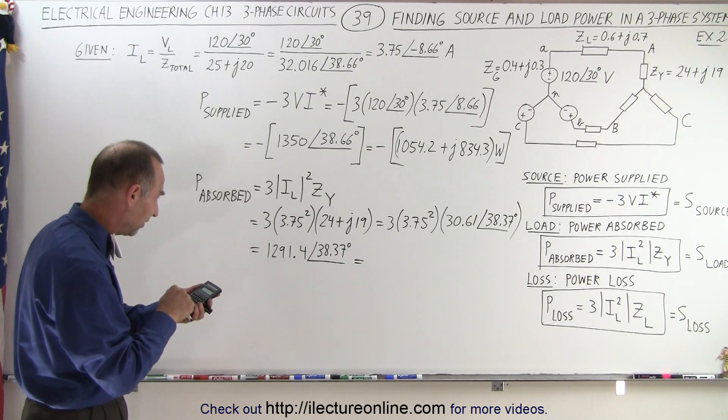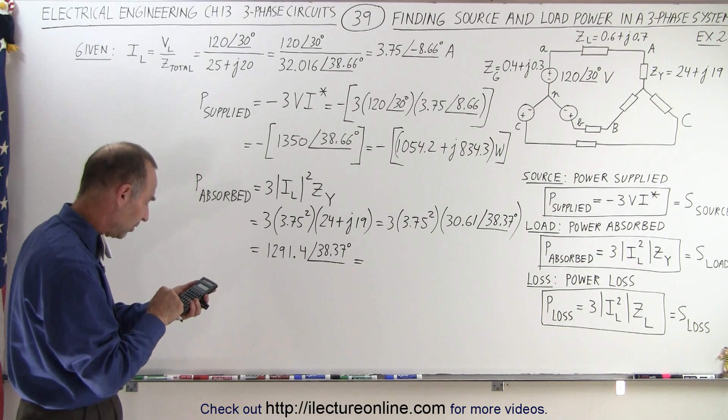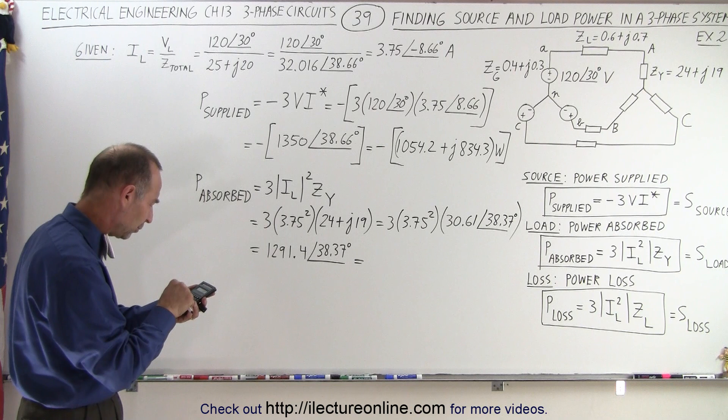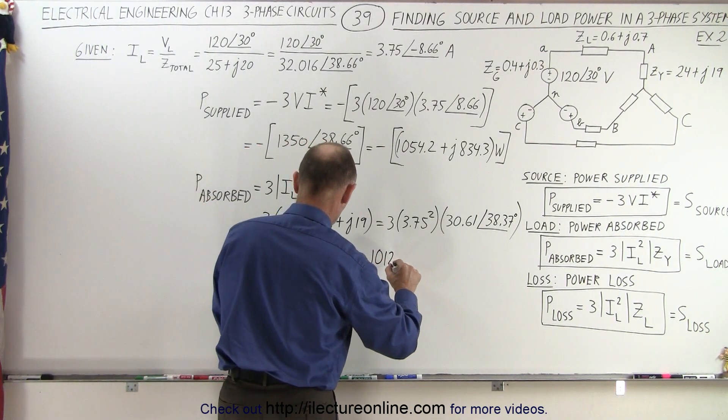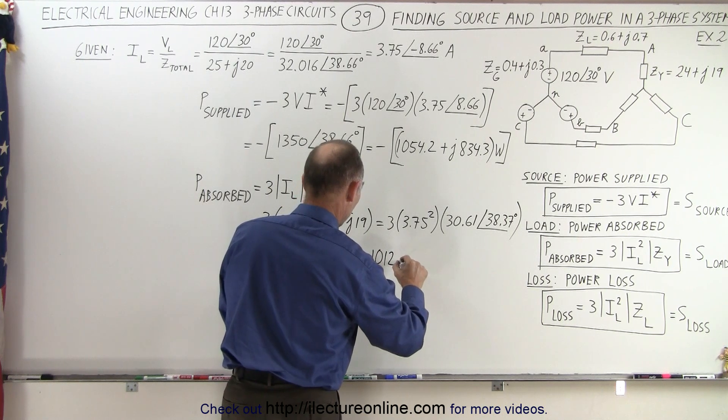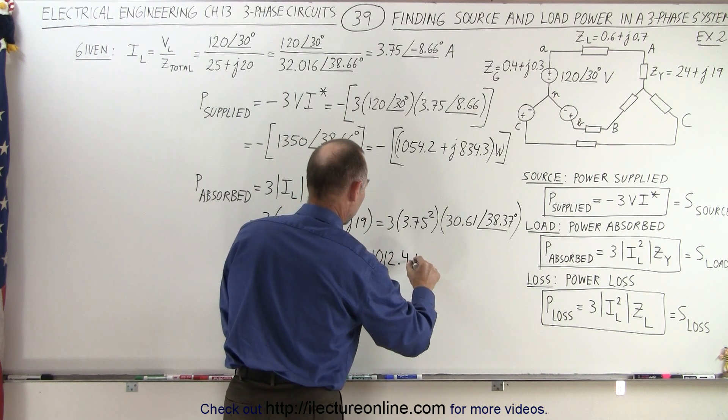So multiply this times 38.37, take the cosine of that, equals the real part of 1012.4 plus j.